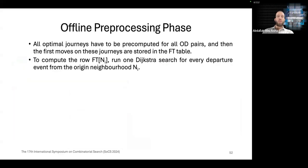Now, to compute a row, FTN1, we can run one Dijkstra search for every departure event from the origin neighborhood.